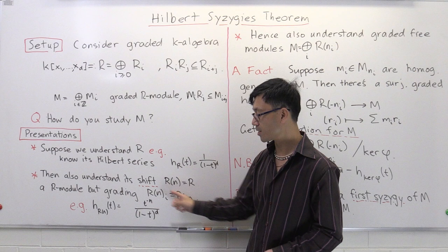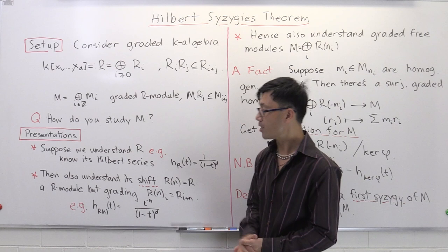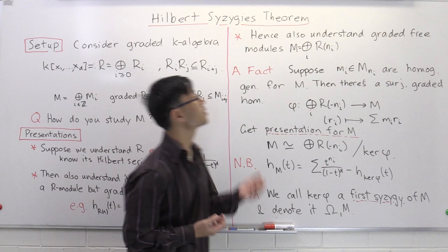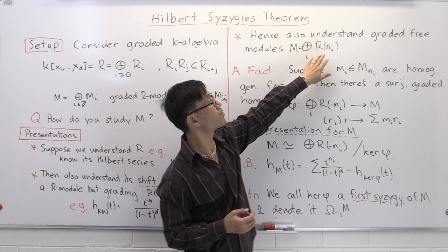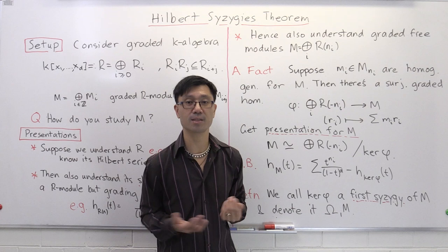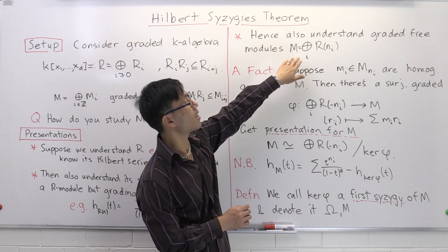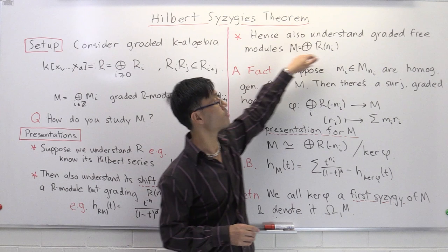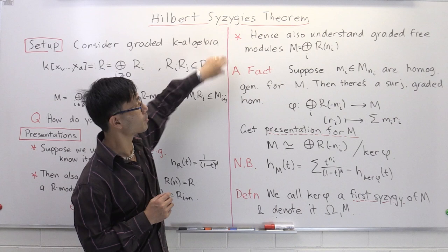If you understand R, then it's quite easy to understand R(n) — its Hilbert series is easy to compute. Taking direct sums is a simple procedure, so if you take direct sums of modules of this form, you understand those as well. These modules are called graded free modules: a direct sum of shifts of R is a graded free module. The Hilbert series of a direct sum is just the sum of the Hilbert series of the individual components, so you know the Hilbert series of any graded free module.